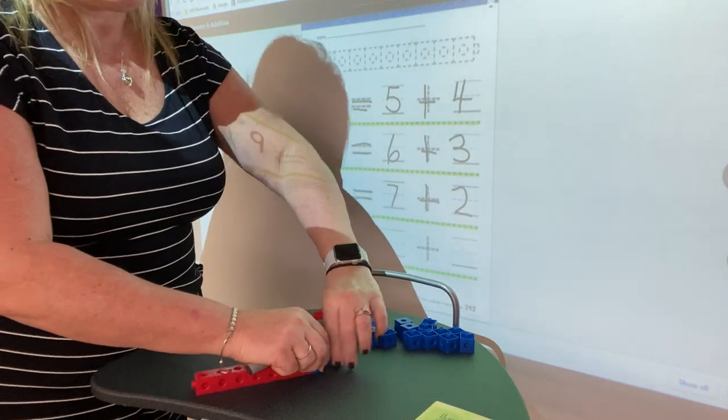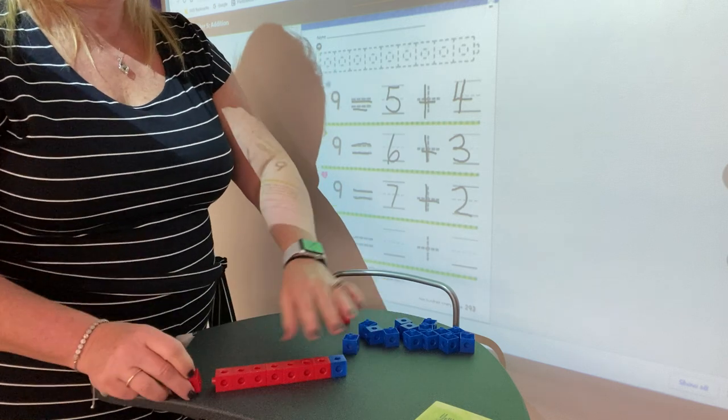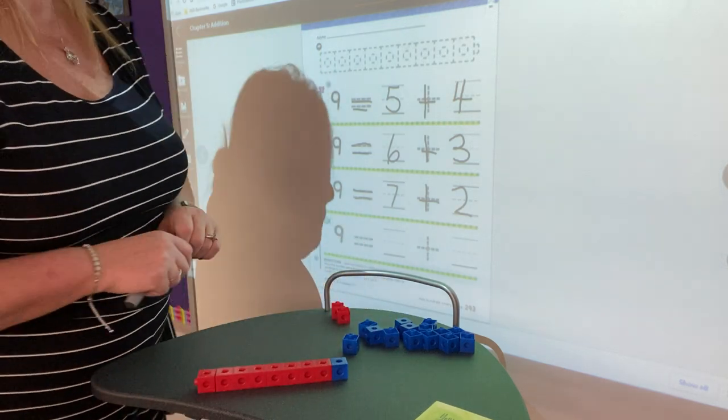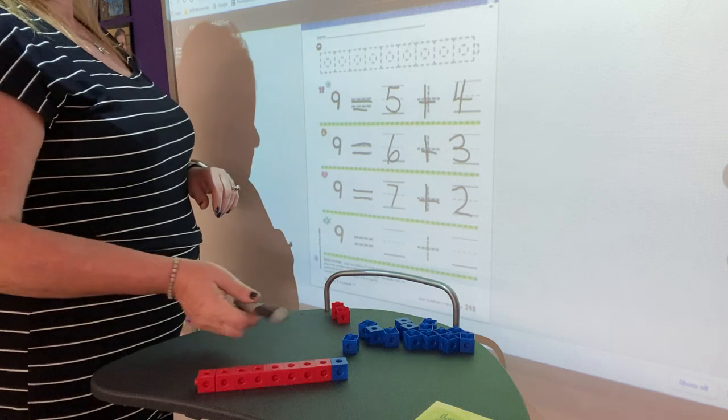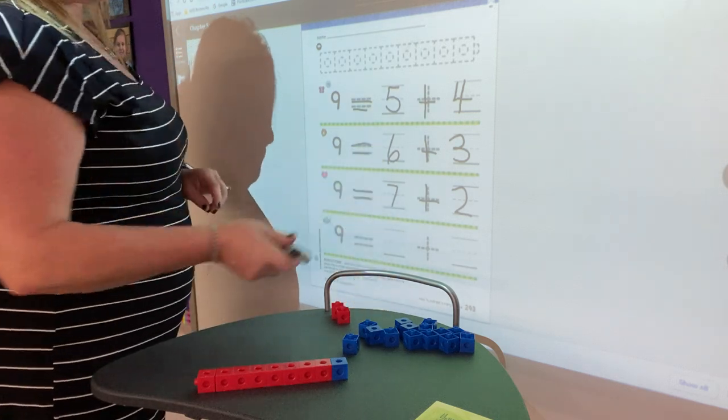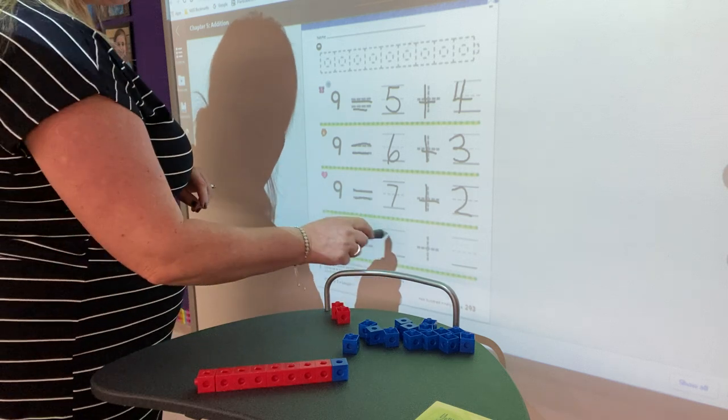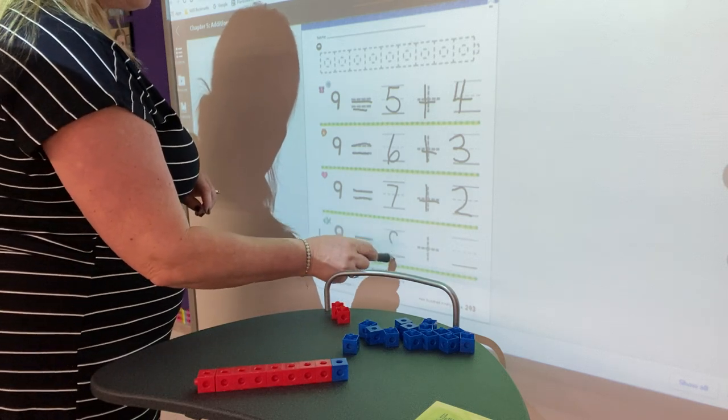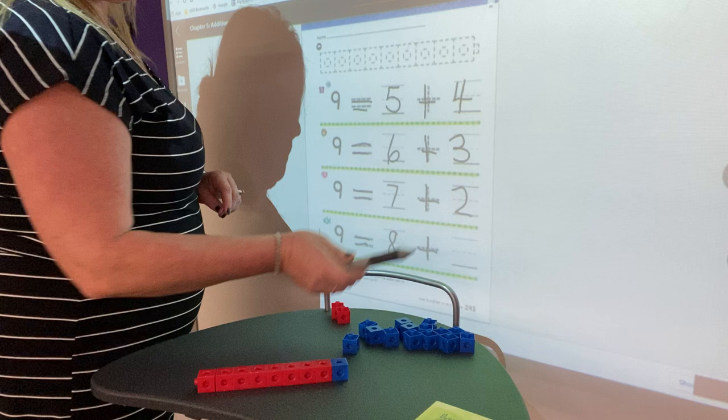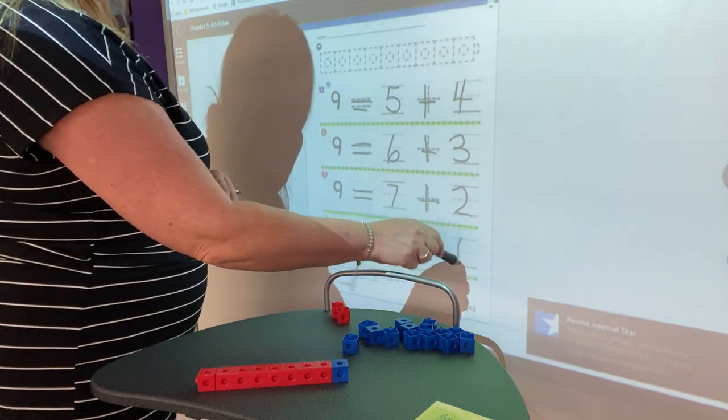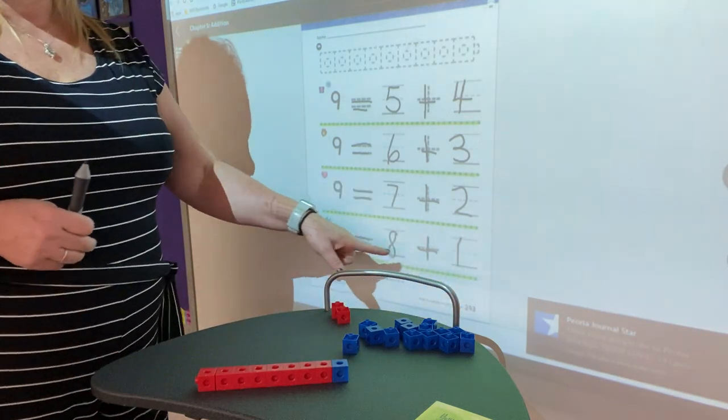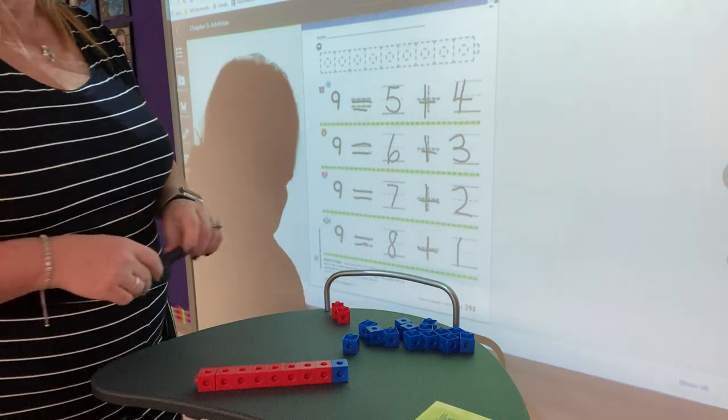And our very last one for this page. Take away a blue, add a red. This is where we started. This is where we started to begin with. 1, 2, 3, 4, 5, 6, 7, 8. There are 8. 9 is equal to 8 plus how many blues? 1. 1 blue. So 9 is equal to 8 plus 1.